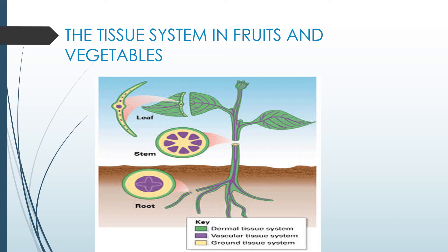The tissue system in fruits and vegetables can be seen in this picture. The dermal tissue is shown in green, covering most of the outer part of the plant. Then there is the vascular tissue system, and the ground system is also present inside the dermal and vascular system.